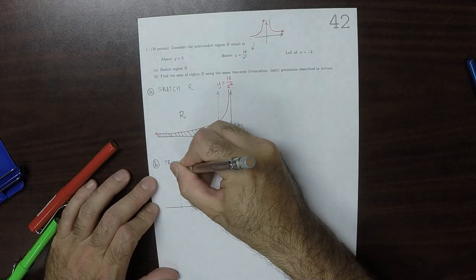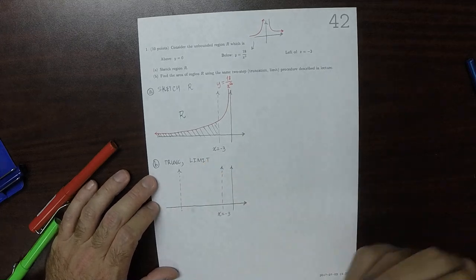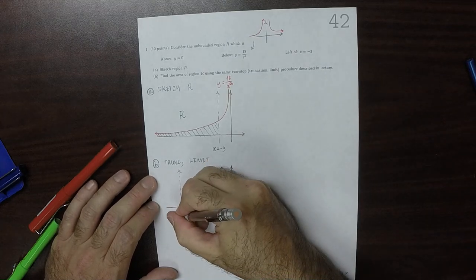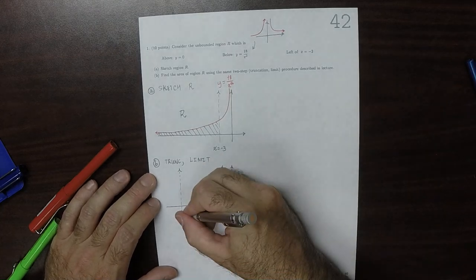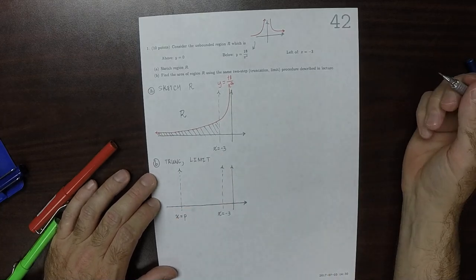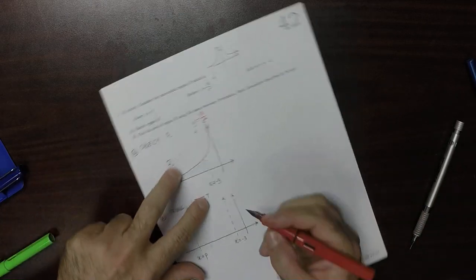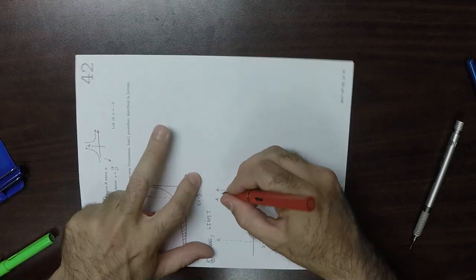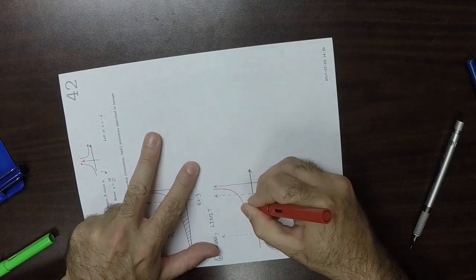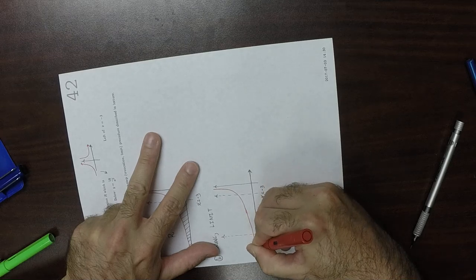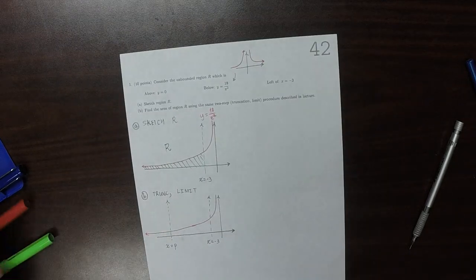And we'll choose some point to the left of negative 3. Any letter will do, I'll use, how about P? Just so we're using different letters every once in a while. And what we'll do is, we'll consider this region. Consider the region that's just in here.